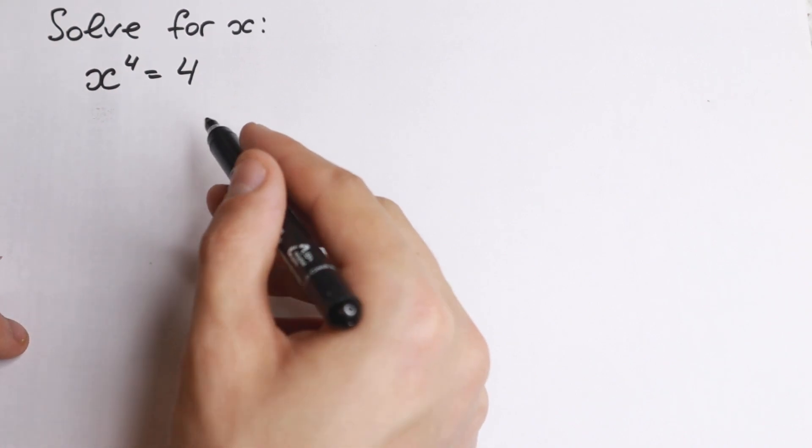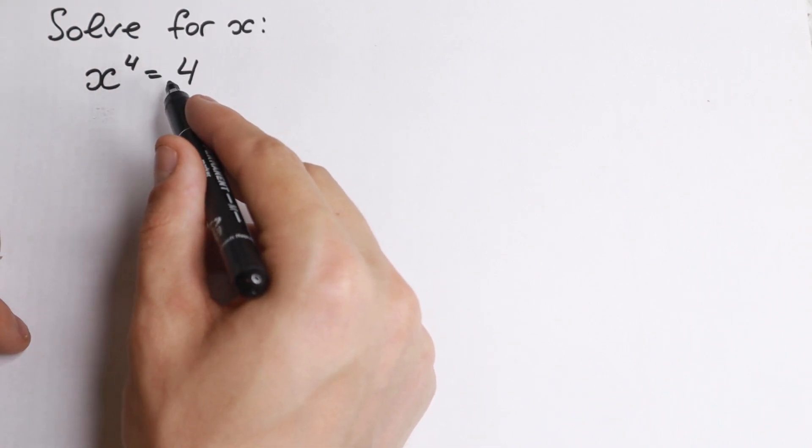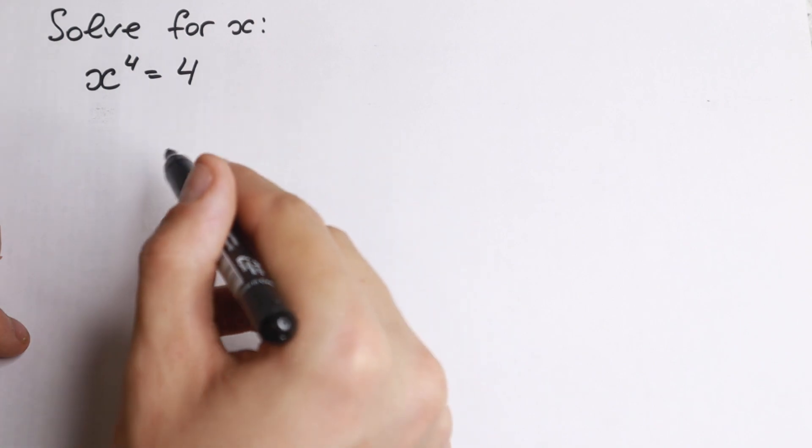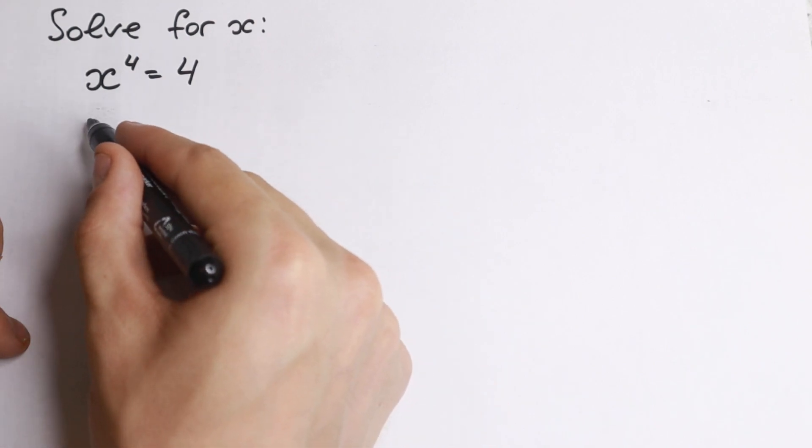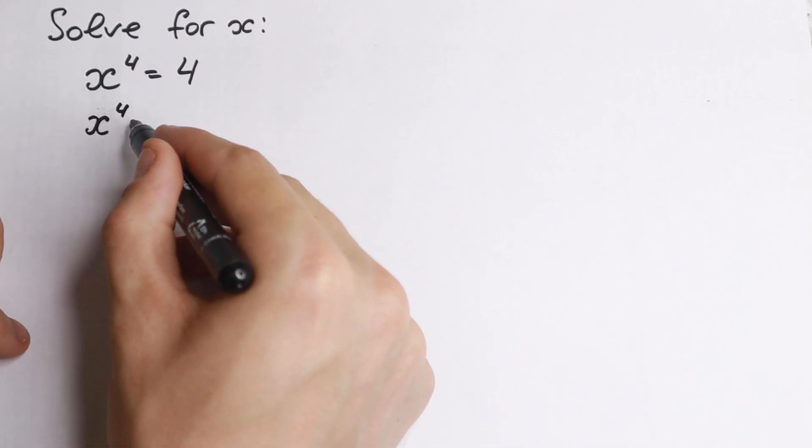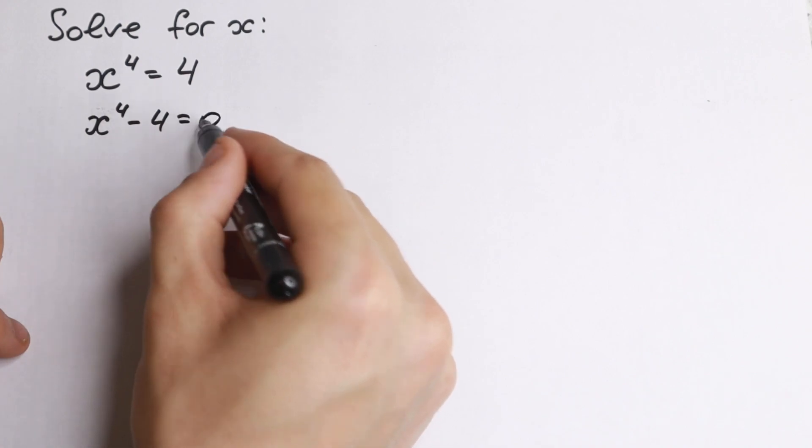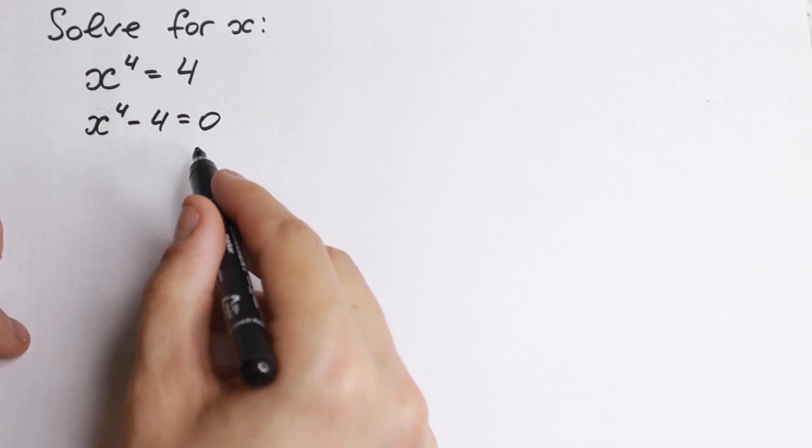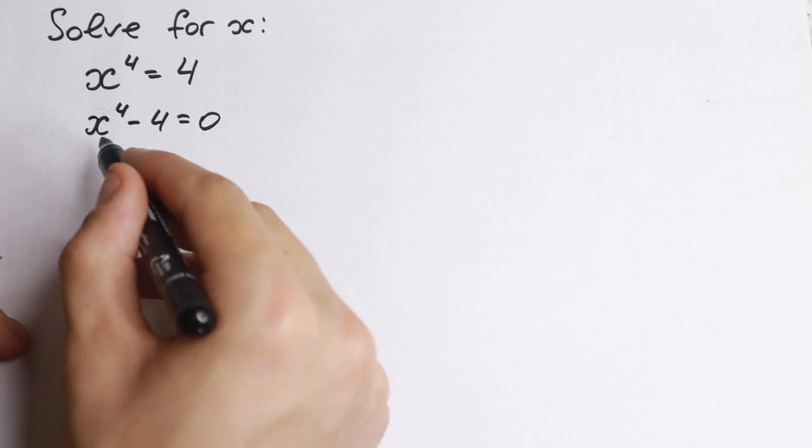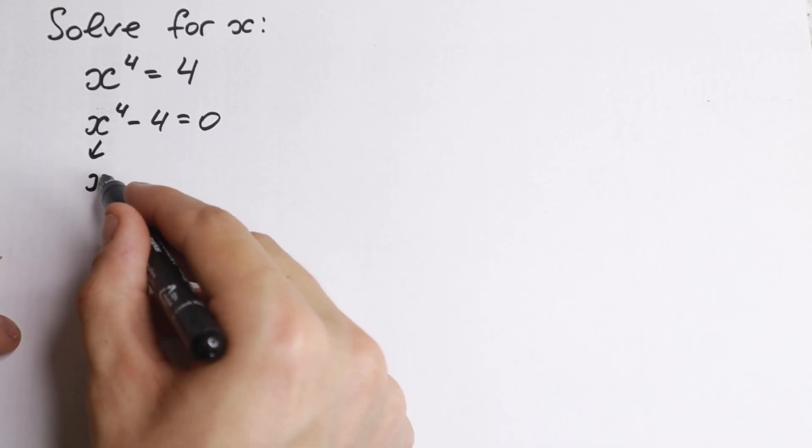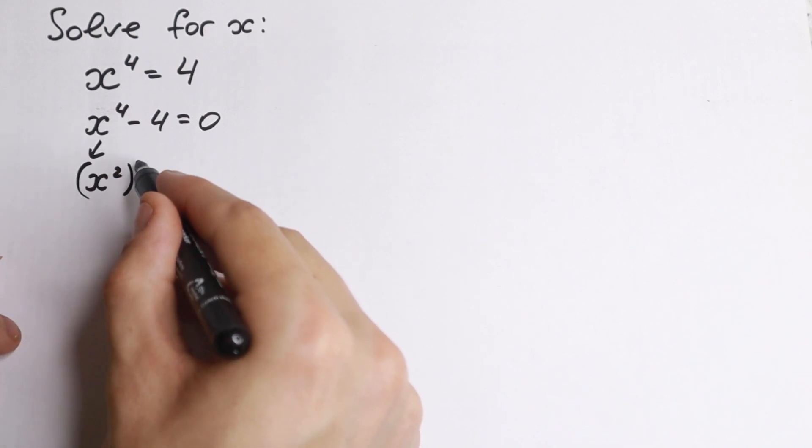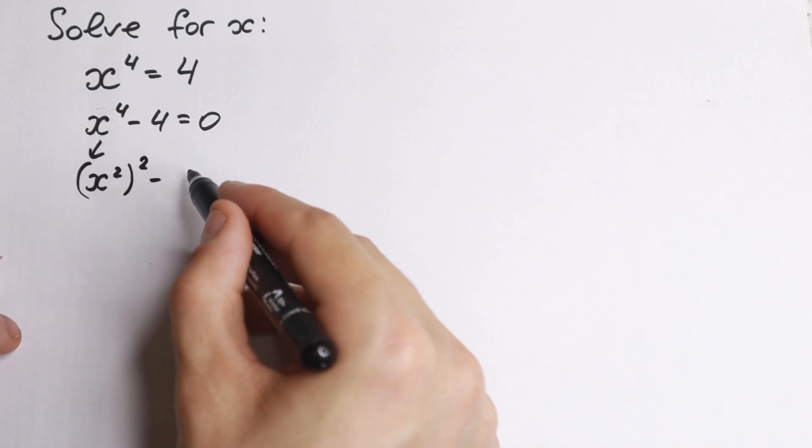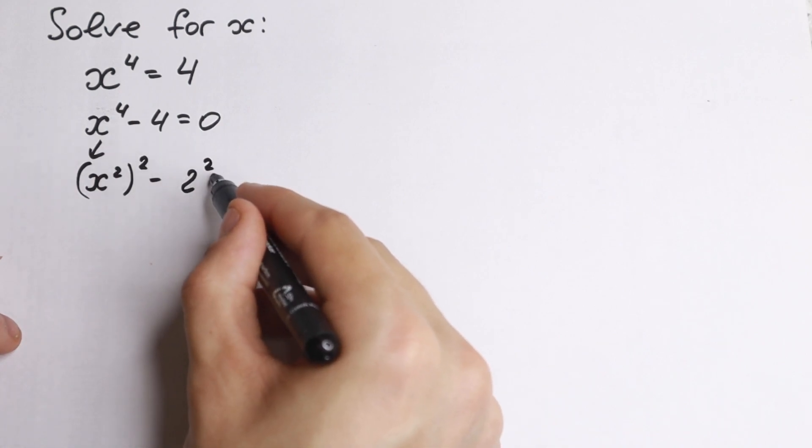How can you do this? Of course we can take fourth root on both sides and we will have our answer, but this is not a full answer. If we bring this 4 to the left hand side we have x to the fourth minus 4 equal to zero, and moreover if we write this x to the fourth as x squared squared and this 4 we can write as 2 squared equal to zero.